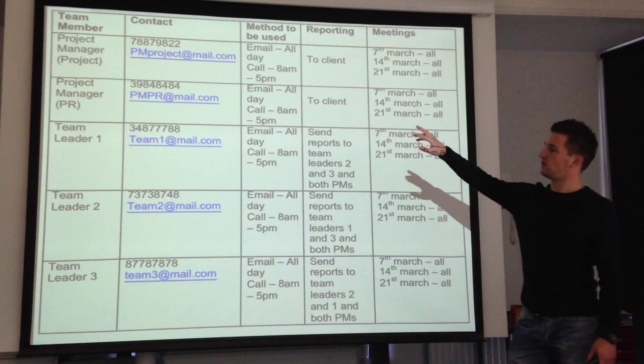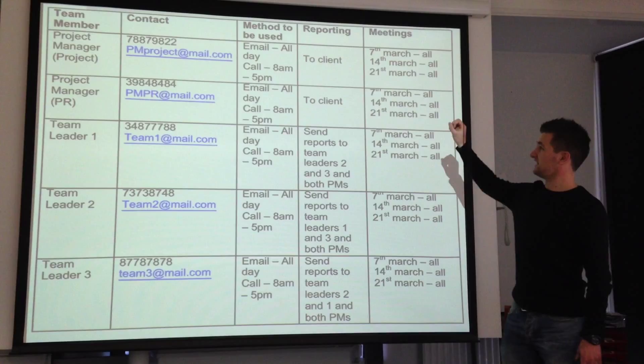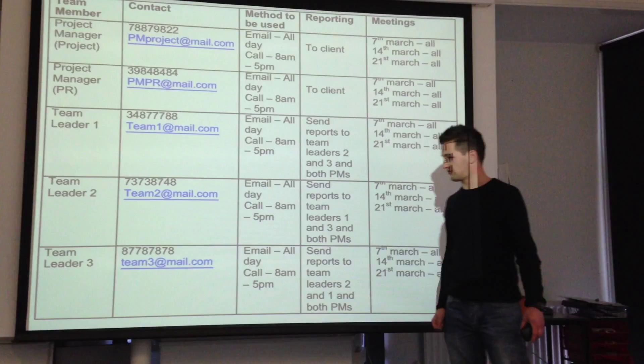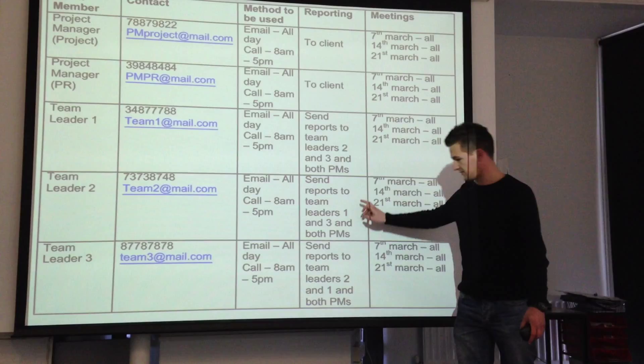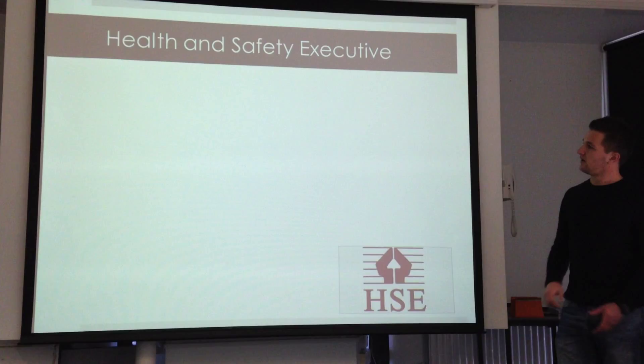This is a brief project directory. For each team member, such as the project manager, you list their phone number, email, method to be used — for example, email all day, calls between work hours eight to five. Reporting is to the client, and meetings are attended by everyone on a set date. For example, subcontractor number three sends reports to teams one, two, and the project managers.